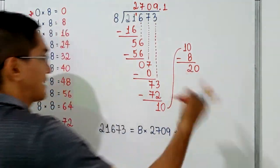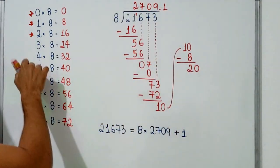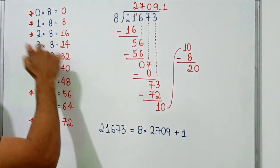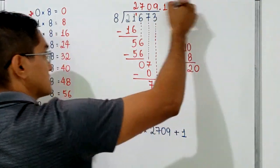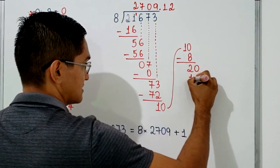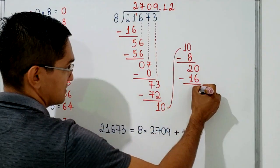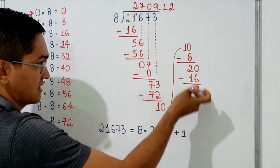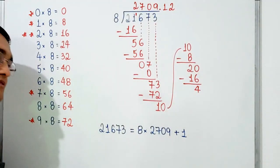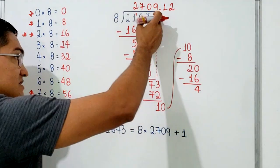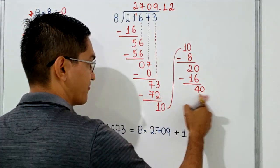There are no digits to bring down, so I bring down another zero, giving us 20. How many times does 8 go into 20 without going over? 3 times 8 is already too much, so the number is 2. I write 2. Since 2 times 8 equals 16, I subtract: 20 minus 16 equals 4, because 16 plus 4 equals 20.